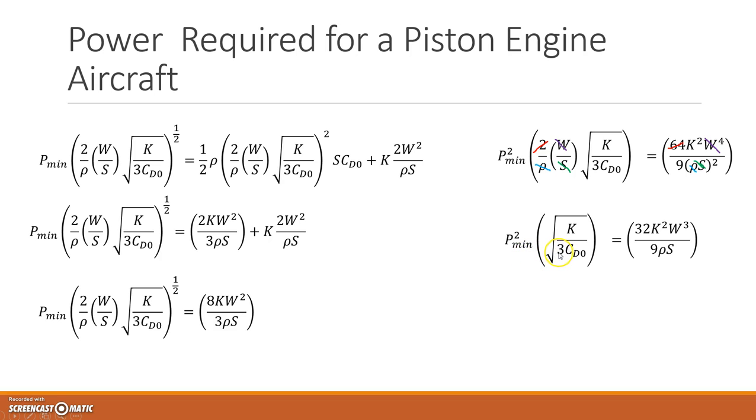I want to multiply by root 3CD0 over K to get rid of this expression. So that's what my equation becomes. And then we can start simplifying this.